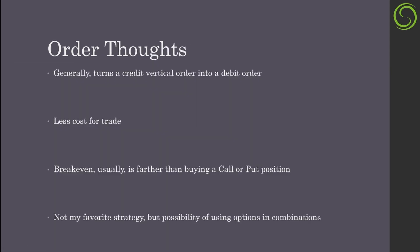Generally, this order is constructed by taking a credit vertical and turning it into a debit order with one additional call or put that you're buying. It's a delta play, with theta having a big negative impact. What this allows you to do is reduce the cost of your trade — rather than buying a call or put outright, you use the credit from the vertical to reduce that cost. The downside is the break-even is going to be farther away than just buying a call or put outright. That's not my favorite strategy, but I'm excited to show how options combinations can create great trading ideas.